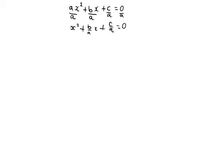We take the constant term c over a to the right-hand side of the equal sign, and we'll have x squared plus b over a times x equal to negative c over a.